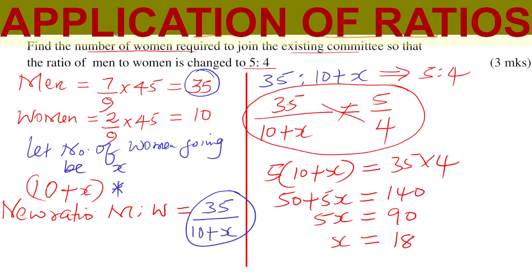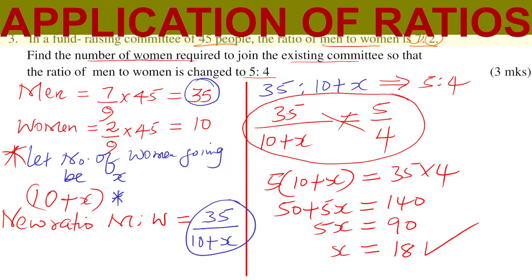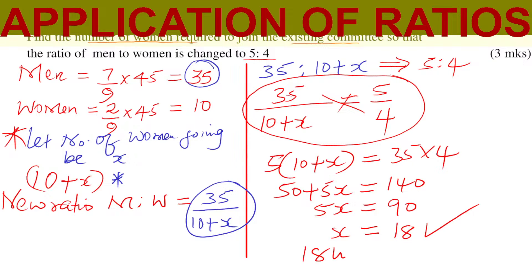So X is 18. And remember, X was the number of women who are going to join. So the number of women required to join is therefore 18 women.